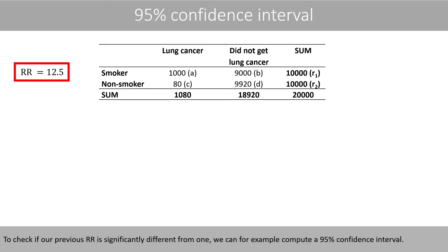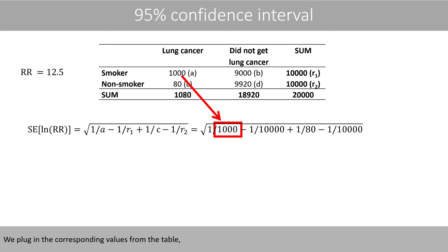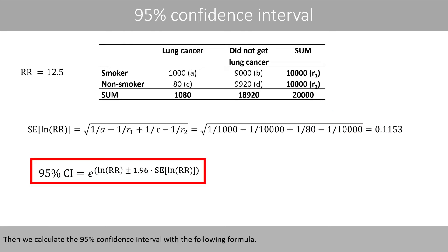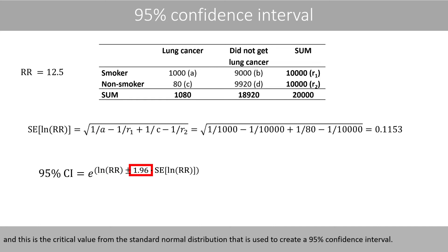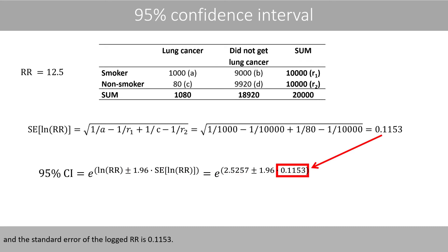To check if our previous relative risk is significantly different from 1, we can compute a 95% confidence interval. To calculate it, we first begin to calculate the standard error of the logged relative risk with the following formula. We plug in the corresponding values from the table and do the math. Then we calculate the 95% confidence interval with the following formula, where this is the natural log of the relative risk. The natural log of 12.5 is about 2.5257, and the standard error of the logged relative risk is 0.1153.